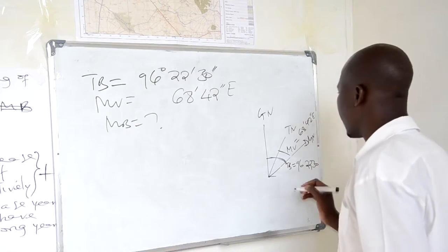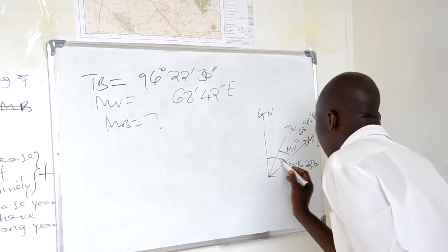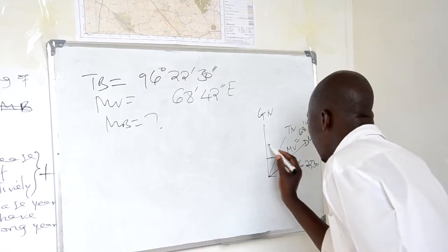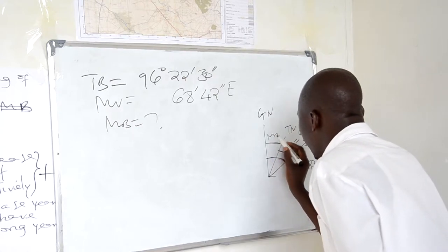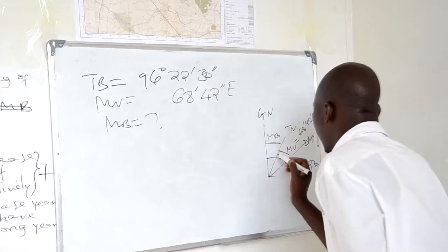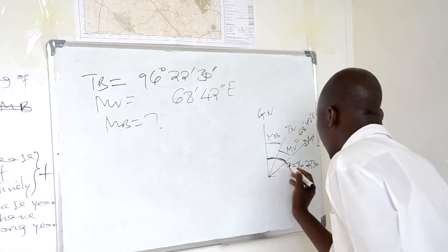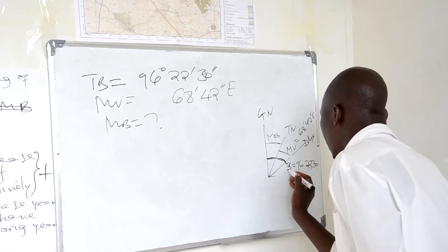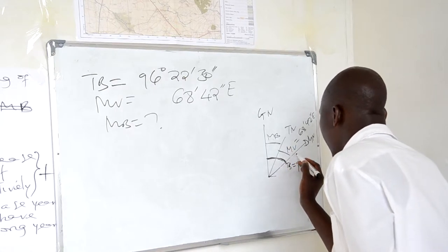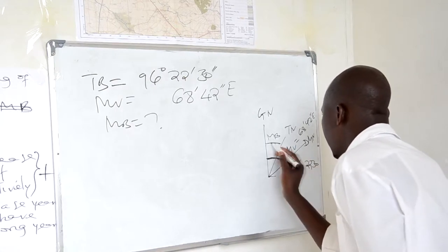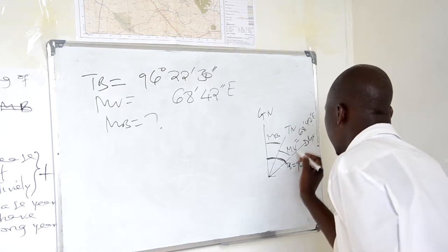Therefore, in order to obtain the magnetic bearing, because we have the true bearing but not the magnetic bearing, we have to take true bearing minus magnetic bearing to obtain this.